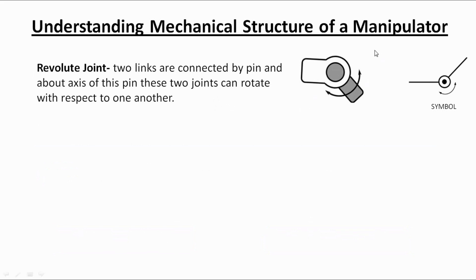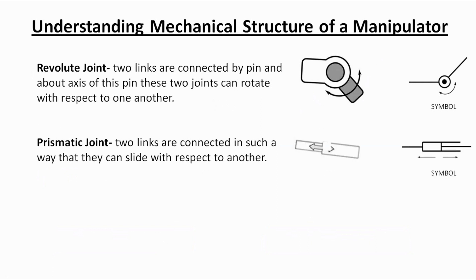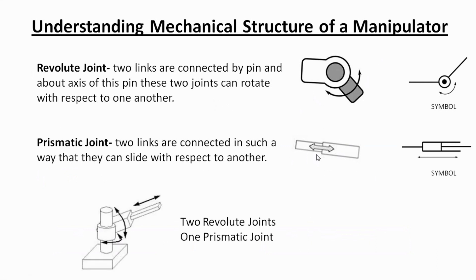The second one is the prismatic joint. In the prismatic joint, two links are connected in such a way that they can slide with respect to one another, as shown in the diagram. A manipulator diagram is shown over here with two revolute joints and one prismatic joint, or sliding joint. Prismatic joint is also known as the sliding joint.